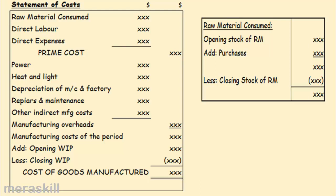It's all the direct costs — the summation of direct costs is called prime cost. When you say raw material, remember it's not raw material purchased but raw material consumed — opening stock plus purchases, normally on a FIFO (first in, first out) basis. So opening inventory we consume first, then what we purchased, less the closing stock is what we have not consumed. Add direct labor and direct expenses — any expense you can identify directly with the product is a direct expense — and this gives you prime cost.